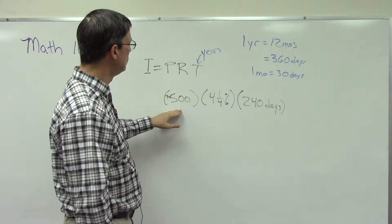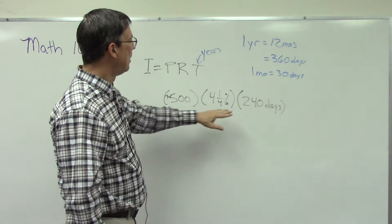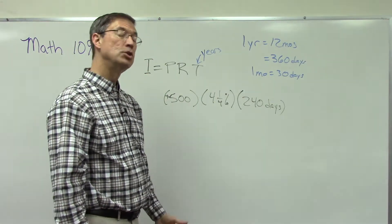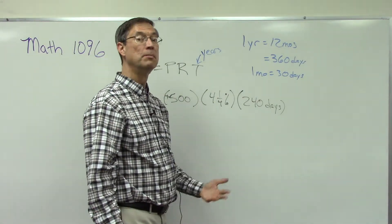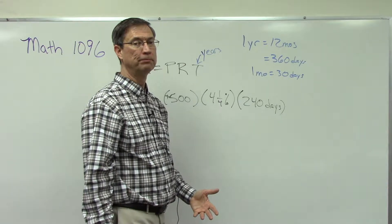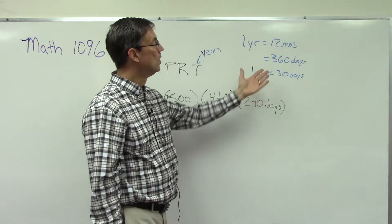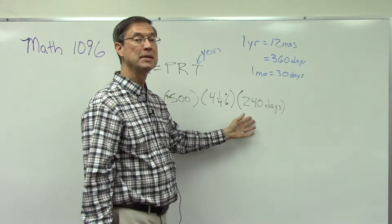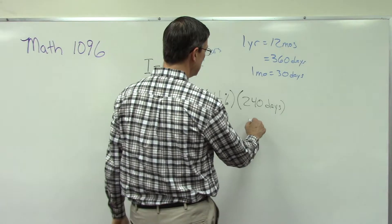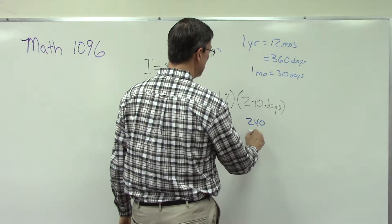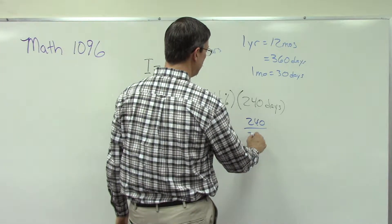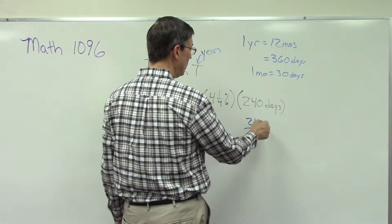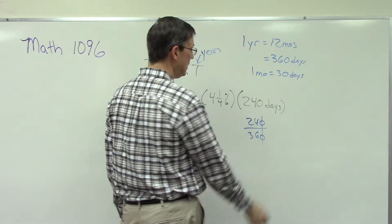I'm going to use $500 as the principal. Now let's talk about what we do with 240 days. Is 240 days more or less than one year? Well, one year is 360 days, so 240 days is less than one year. So we're going to write this as a fraction: 240 over 360.